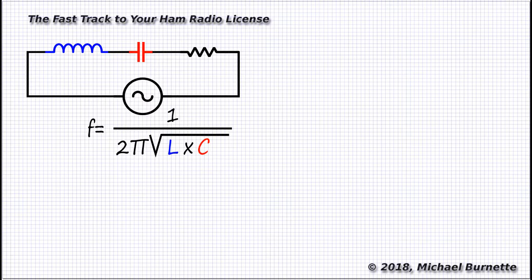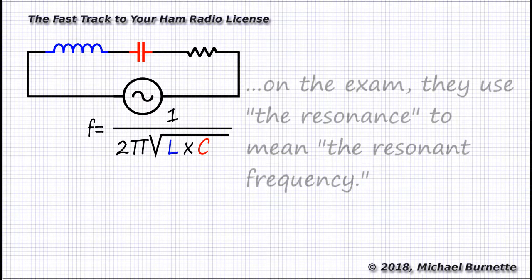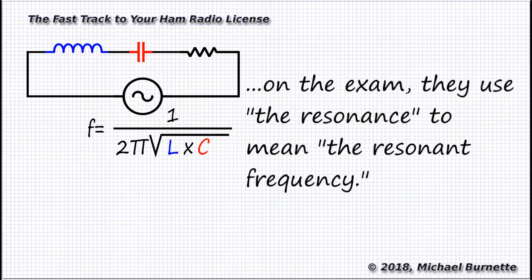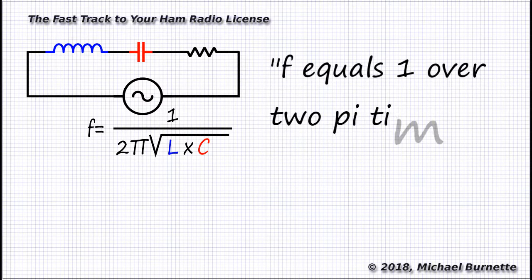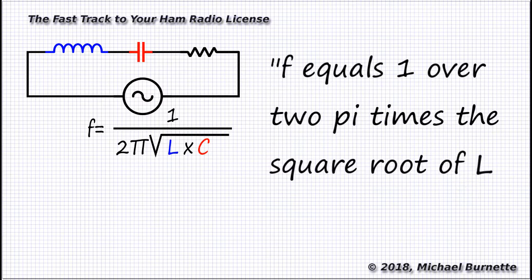Now, I've color-coded those values to make them easy to follow through the next step. To find the resonant frequency in Hertz, also known as simply the resonance, we multiply the inductance in Henrys times the capacitance in Farads. We take the square root of that, multiply that square root by 2 times pi—or you can use 6.28—and then divide that answer into 1.